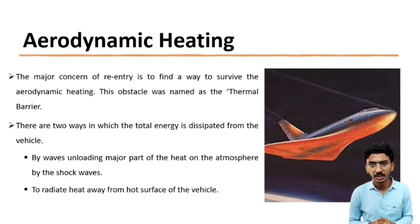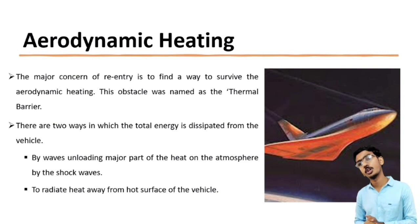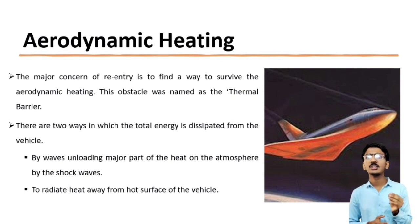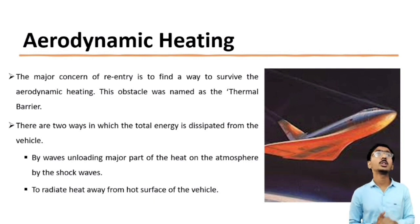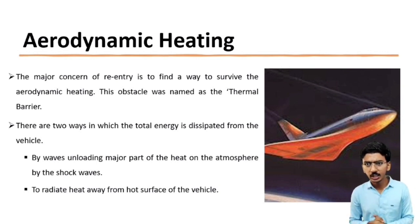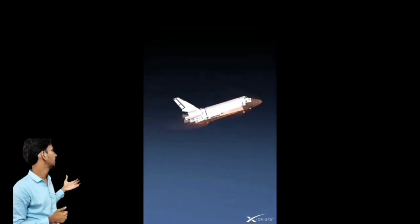The next important topic is aerodynamic heating. The major concern of reentry is to find a way to survive the aerodynamic heating, referred to as the thermal barrier. A vehicle approaching the Earth's atmosphere from space possesses a large amount of kinetic energy due to its speed, and potential energy by virtue of its position. This energy must be dissipated and converted into heat to decelerate the vehicle to zero velocity and altitude. From a speed of 8 km per second, energy per mass of 31.4 megajoules per kg must be dissipated. At such high speeds, air cannot flow out of the way of the spacecraft fast enough. When the vehicle encounters the atmosphere, a shock forms ahead of the nose, heating the atmosphere in that region to very high temperatures.